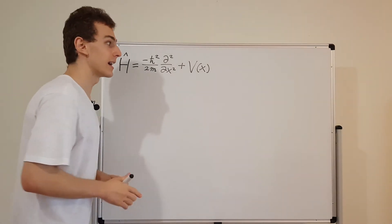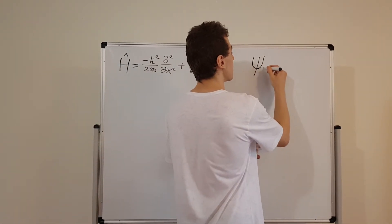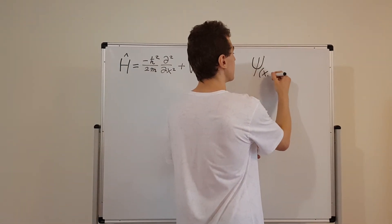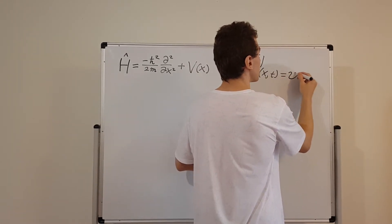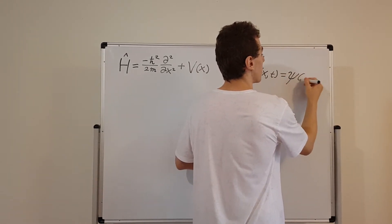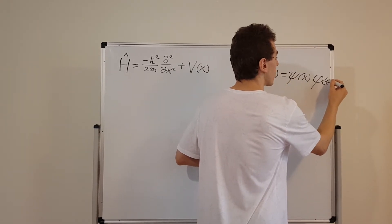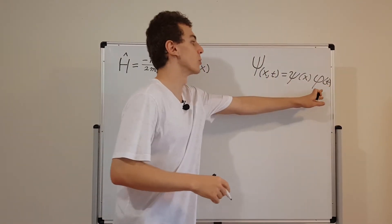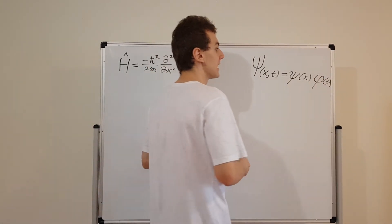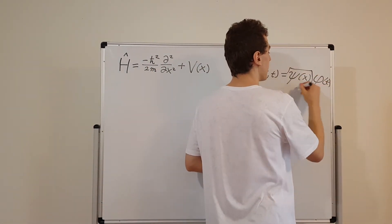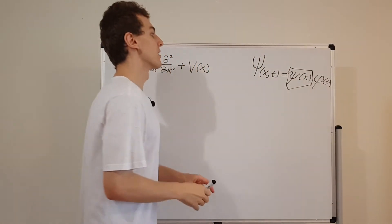Lowercase psi, as opposed to capital psi — capital psi depends on x and t, while lowercase psi just depends on x. There's also a factor related to the time, but we're not going to discuss this time-related factor in this video. We're just interested in psi of x, and the time independent Schrödinger equation is concerned with this.